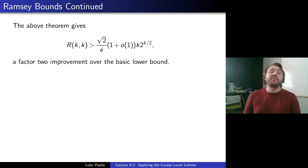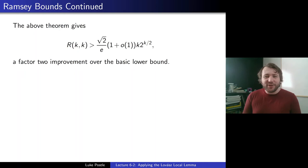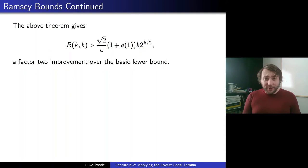The above theorem can be used to show that R(k,k) > (√2/e)·(1 + o(1))·k·2^(k/2). That should sound familiar because that's a factor-√2 improvement over the basic lower bound. When we just used the basic union bound, √2 was on the bottom. When we used alteration, we got rid of it altogether, and now we actually have √2 on top. So yet another improvement in our long-running series on Ramsey lower bounds.